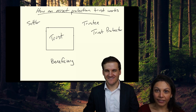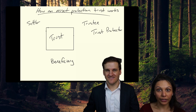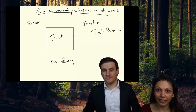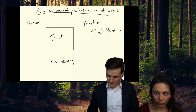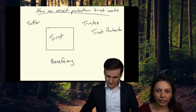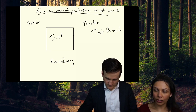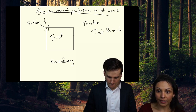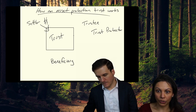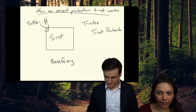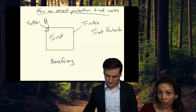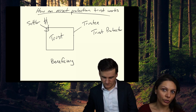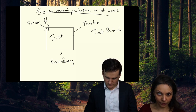An asset protection trust is a trust designed to help you protect yourself during your lifetime. The way that it works is that there are four main roles. Any normal trust will have a settlor, which is the person who created the trust; a trustee, which is the person or entity managing your trust; and a beneficiary, which is the person or persons benefiting from the trust.